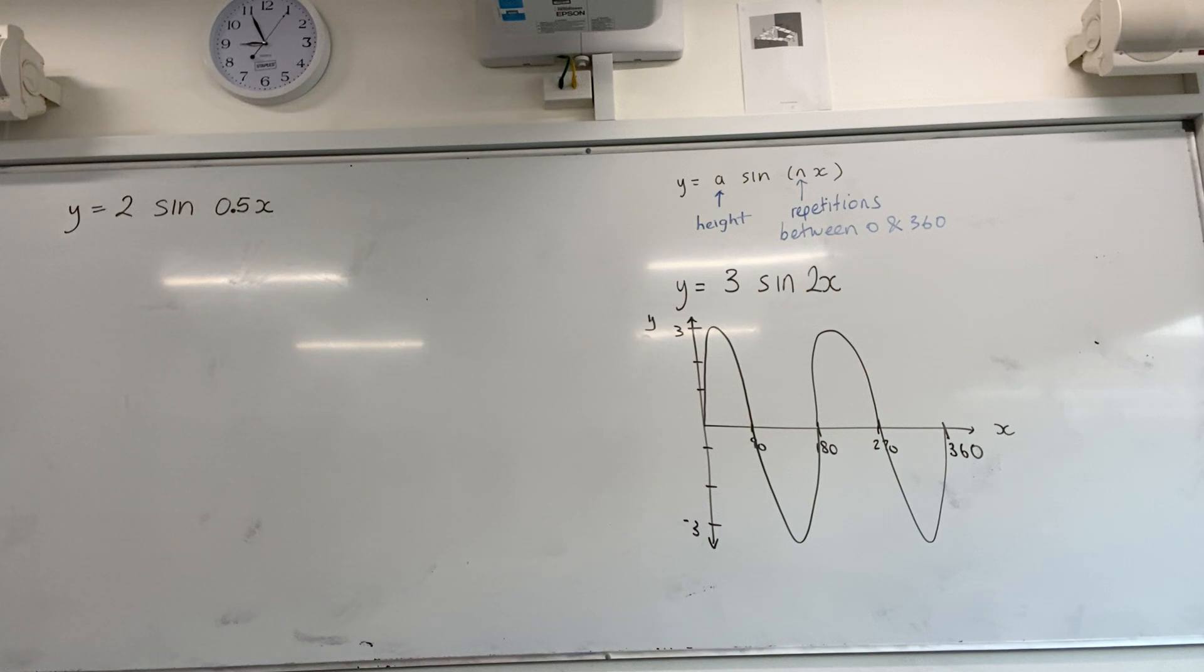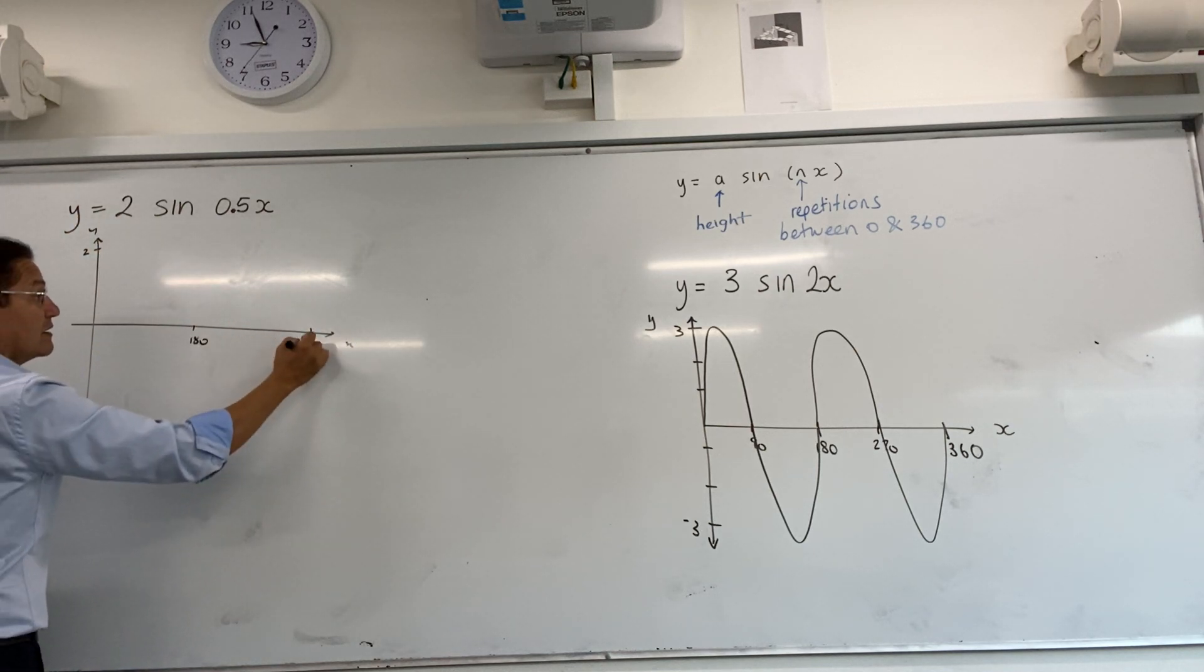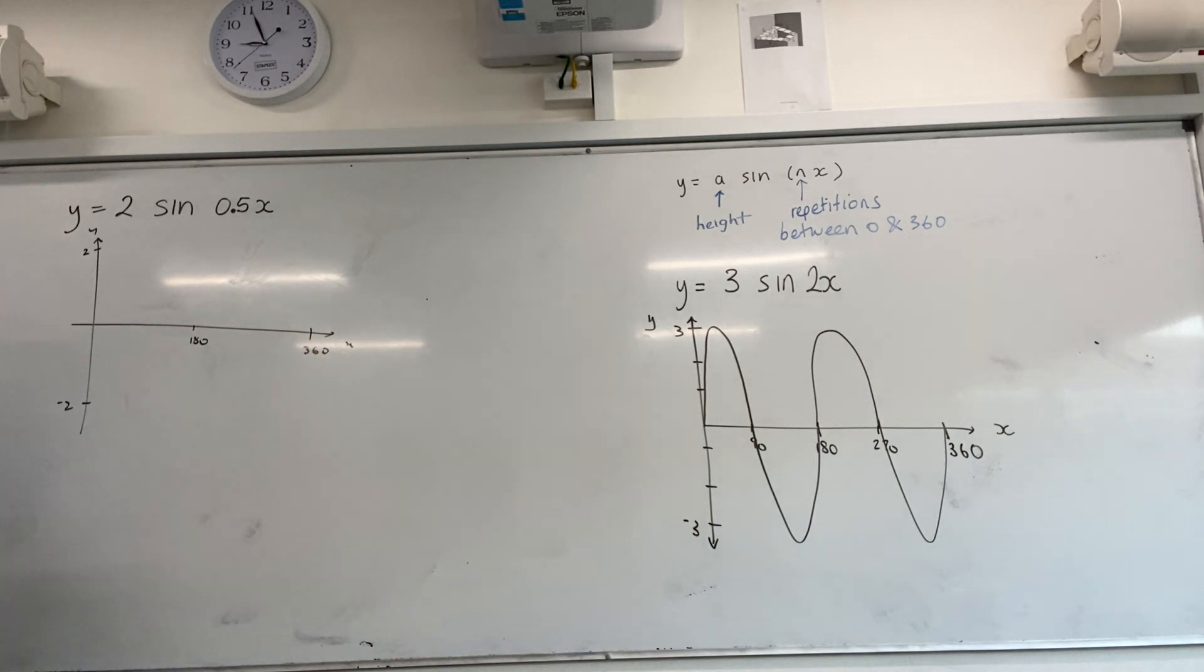So the height would be 2 and minus 2. How much of a repetition is there going to be between 0 and 360? Half. So what it's going to be is this: 2, minus 2, 180, 360.